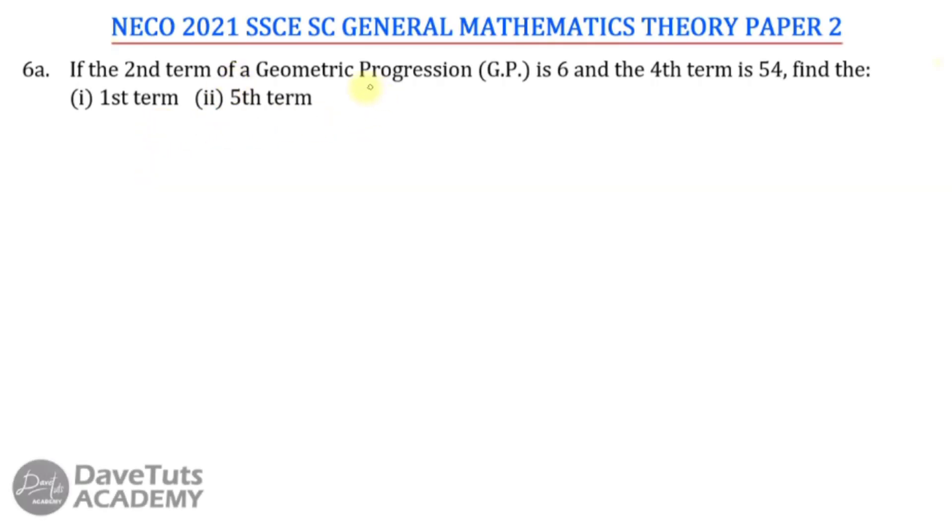In this question on geometric progression under sequences and series, we are told that if the second term of a GP is 6 and the fourth term is 54, we are to find the first term and the fifth term.